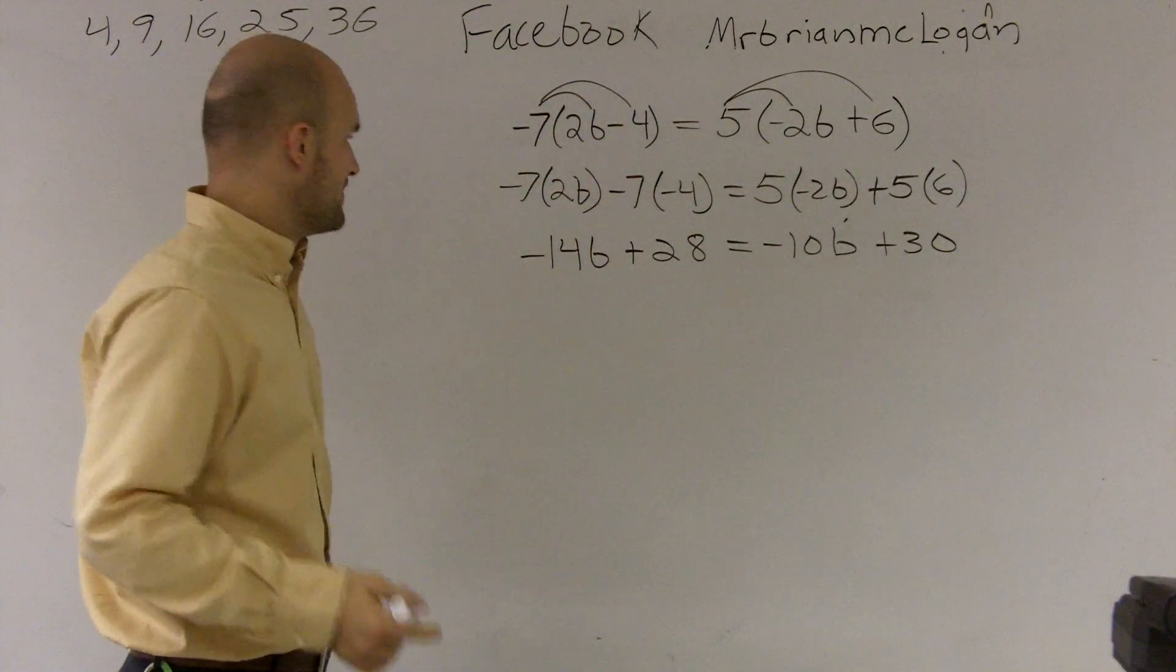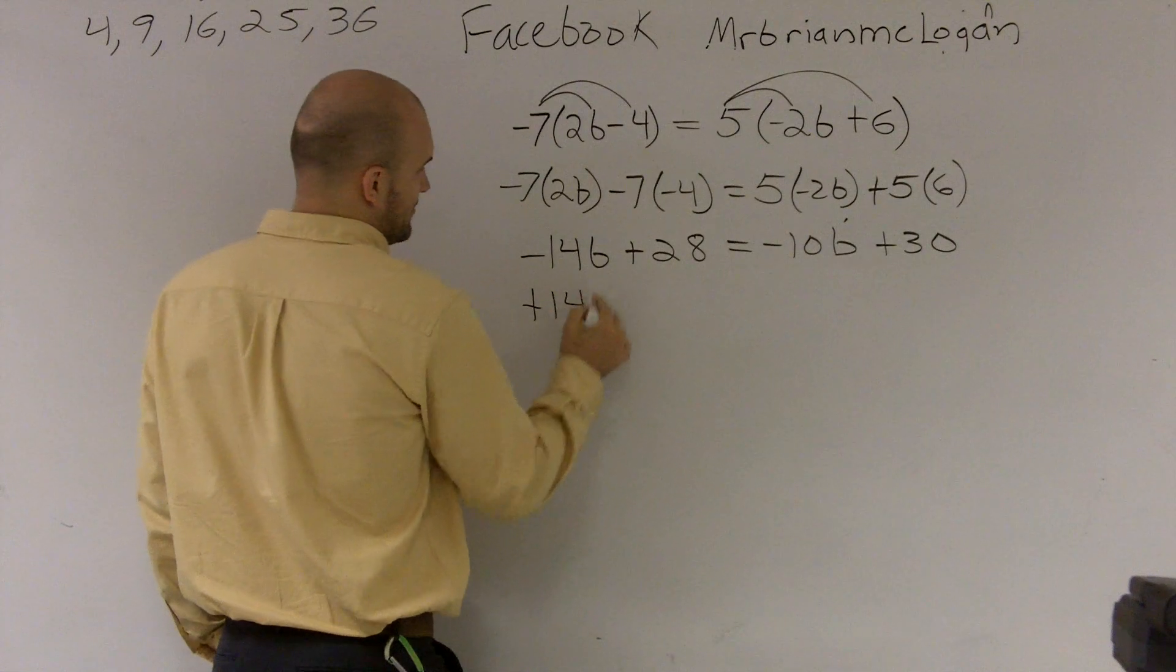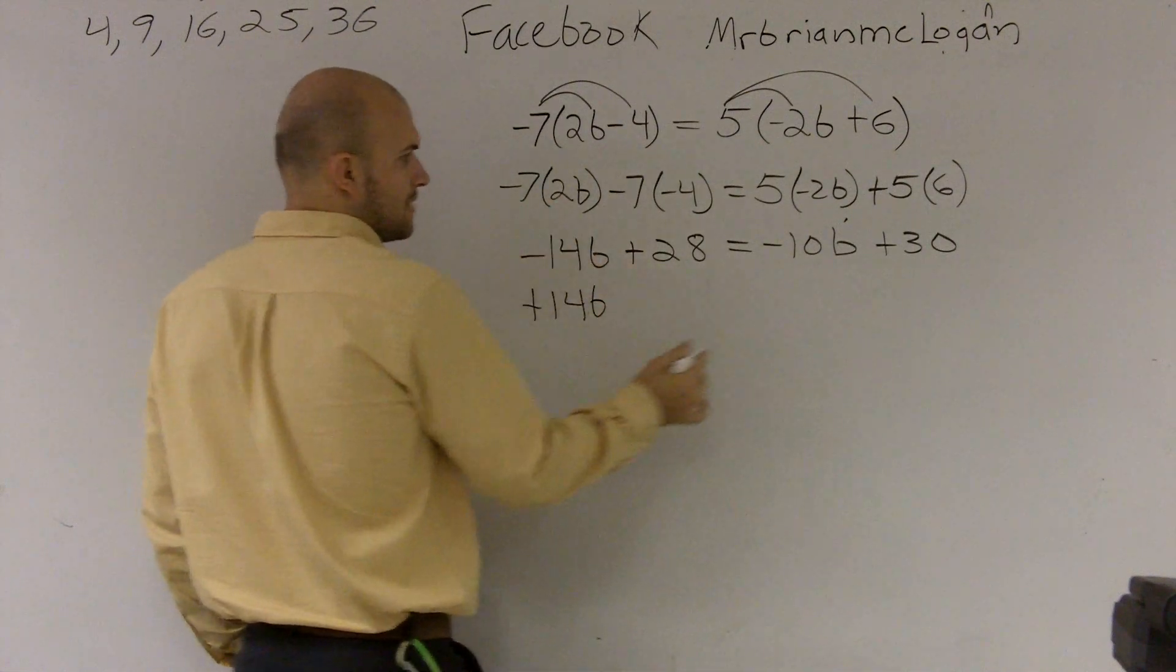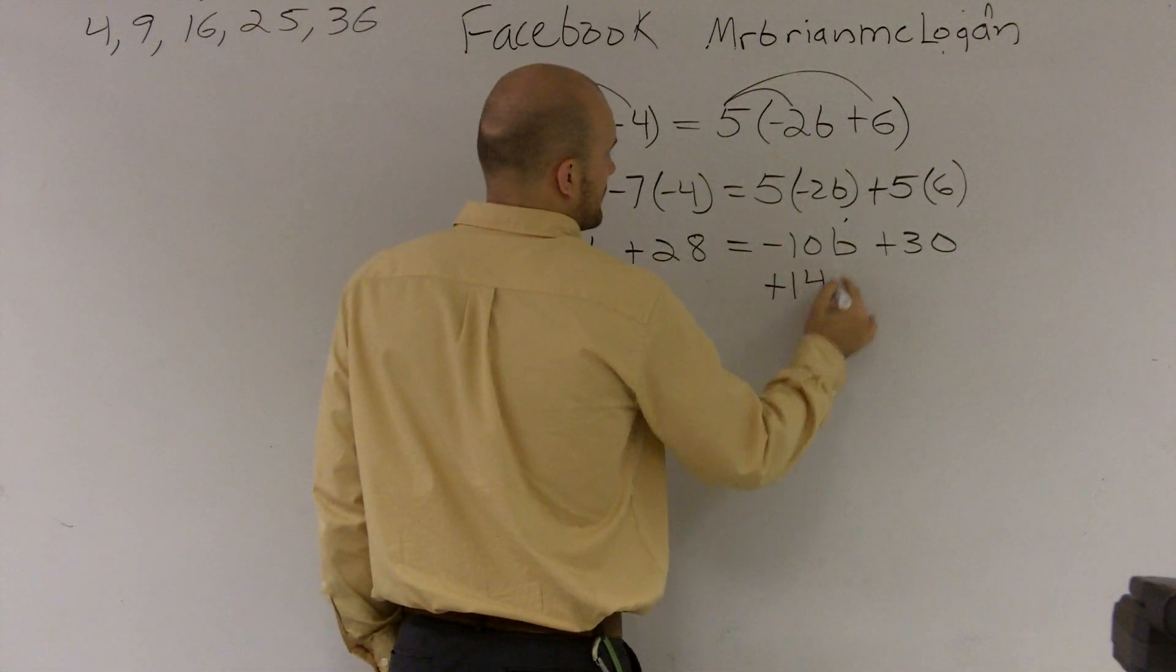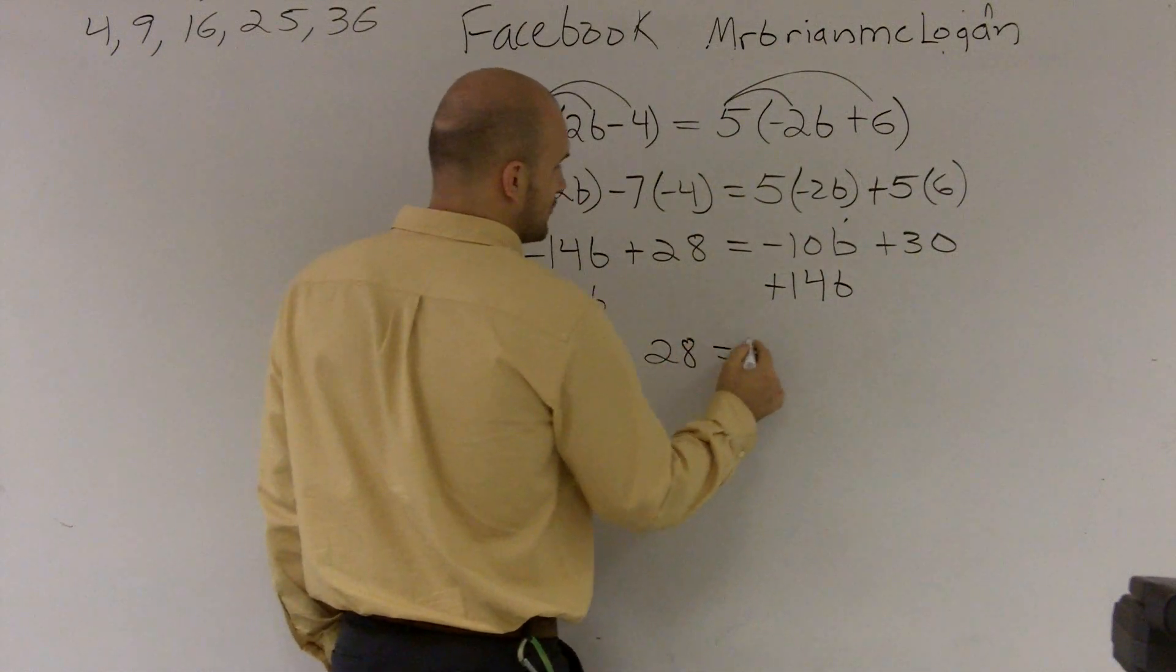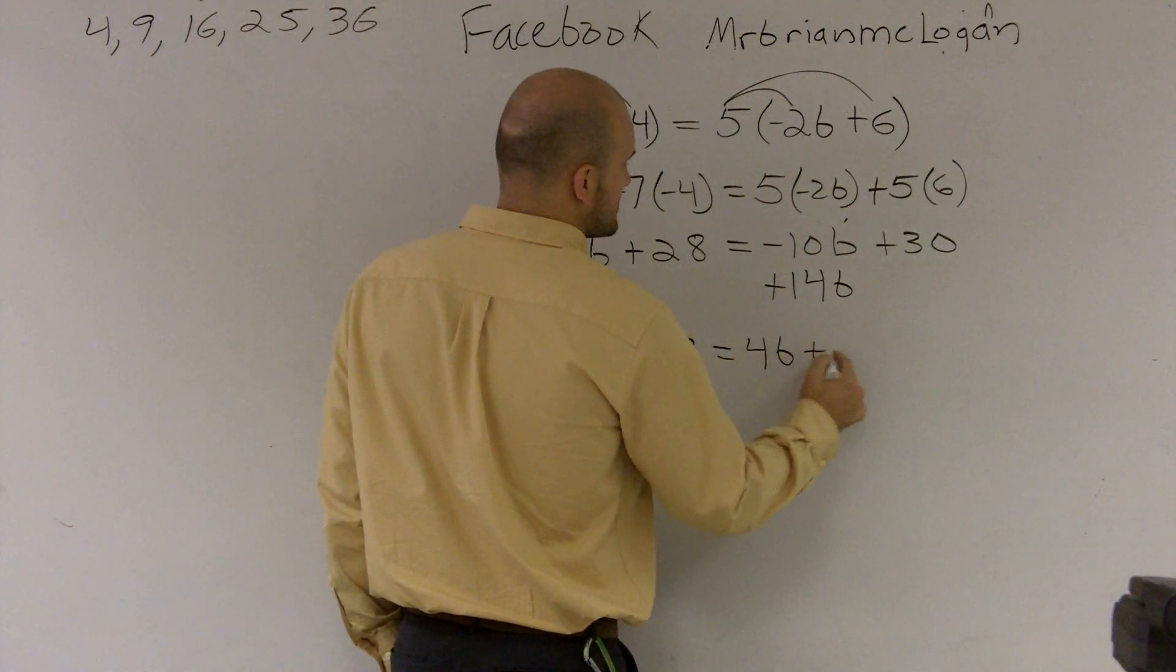What I'd rather do is if I get rid of the variable on the left side by adding a 14b, those will cancel out with each other. Now what I'd obtain is 28 equals 4b plus 30.